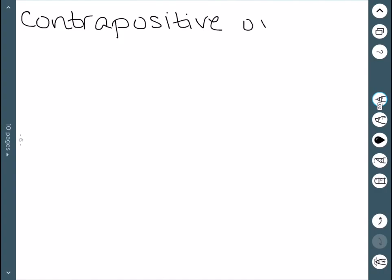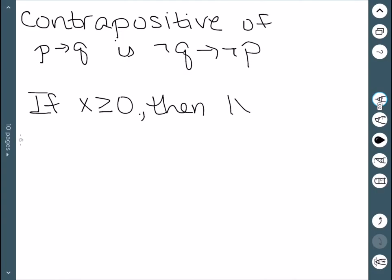Next is the contrapositive. The contrapositive of if P then Q is not Q then not P. So we both switch the order and we negate everything. So if we have our same proposition we had before, if x is greater than or equal to zero, then the absolute value of x is equal to x. The contrapositive: if the absolute value of x is not equal to x, then x is less than zero since that would be the negation.